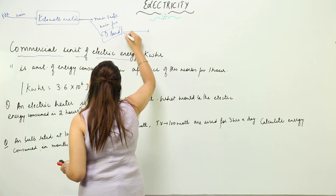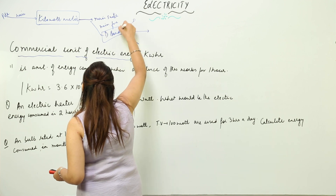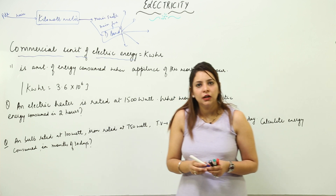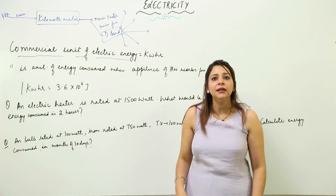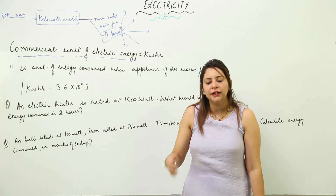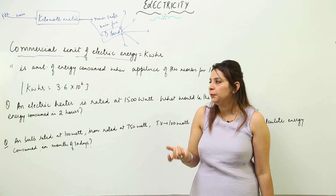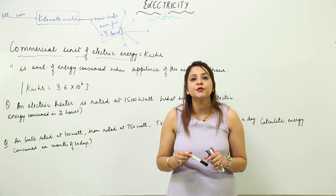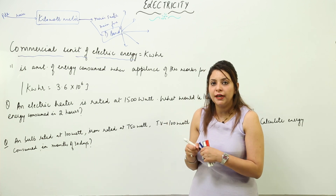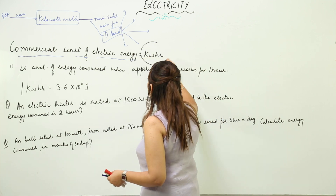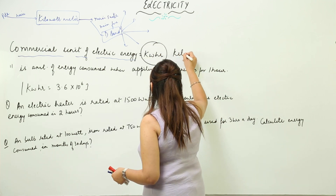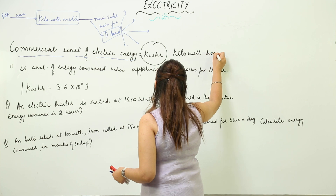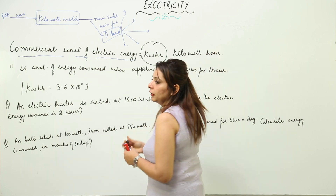From the distribution board, electricity is supplied and connected to the different parts or different appliances which are working in the home. The commercial unit of electric energy in which we measure energy is kilowatt hour.